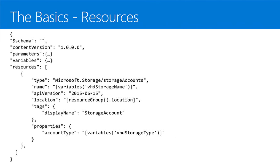For individual resources, you have an array of resources with different types. Microsoft.Storage is the resource provider and storage account is the type. Each resource has a name, an API version — since providers can ship multiple versions — a location or Azure region, optional tags, and properties. You can have a whole lot of resources in this array.